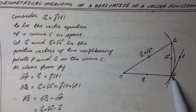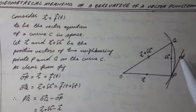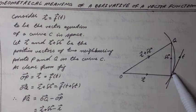Let R vector and R vector plus delta R vector be the position vectors of two neighboring points P and Q on the curve C as shown in figure.